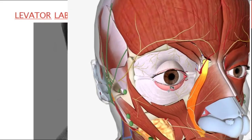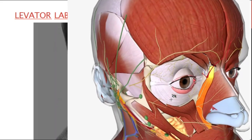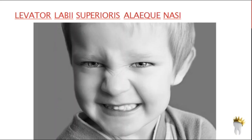Lateral to the nose, a muscle arises from the upper part of the frontal process of the maxilla, passes obliquely, and inserts into the upper lip. This is levator labii superioris alaeque nasi. The name tells you its action: levator labii means it elevates the upper lip, superioris means it's in the superior face, and alaeque nasi means it's beside the alar of the nose. It everts the upper lip, deepens the nasolabial fold, and dilates the nasal alar.